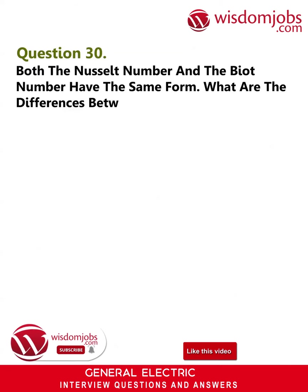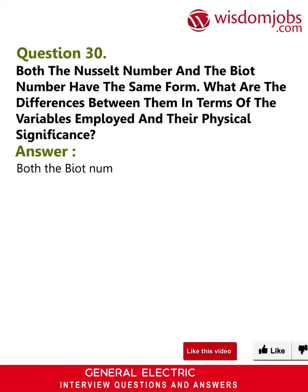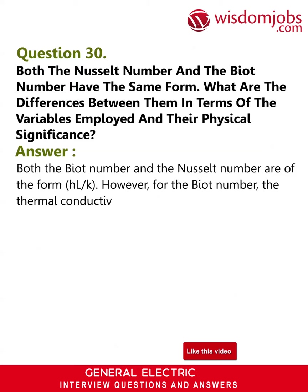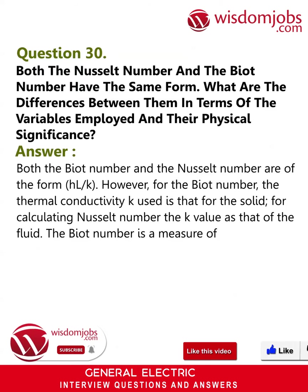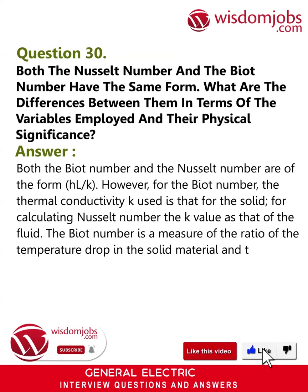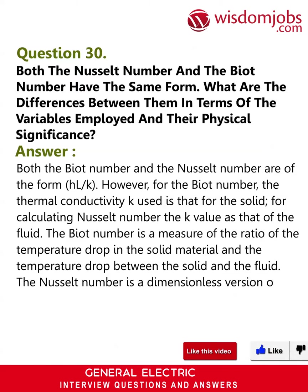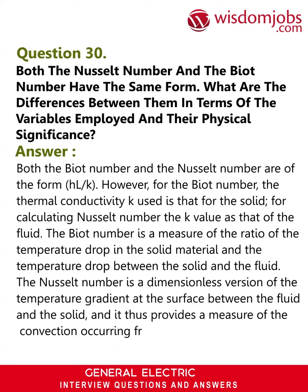Question 30: Both the Nusselt number and the Biot number have the same form. What are the differences between them in terms of the variables employed and their physical significance? Answer: Both the Biot number and the Nusselt number are of the form hL/k. However, for the Biot number, the thermal conductivity k used is that of the solid; for the Nusselt number, the k value is that of the fluid. The Biot number is a measure of the ratio of the temperature drop in the solid to the temperature drop between the solid and the fluid. The Nusselt number is a dimensionless version of the temperature gradient at the surface between the fluid and the solid, and thus provides a measure of the convection occurring from the surface.